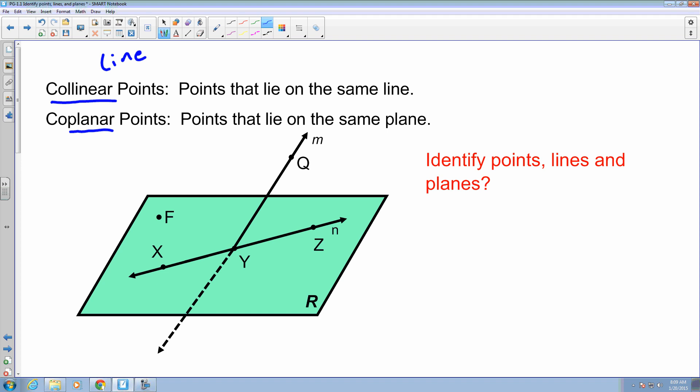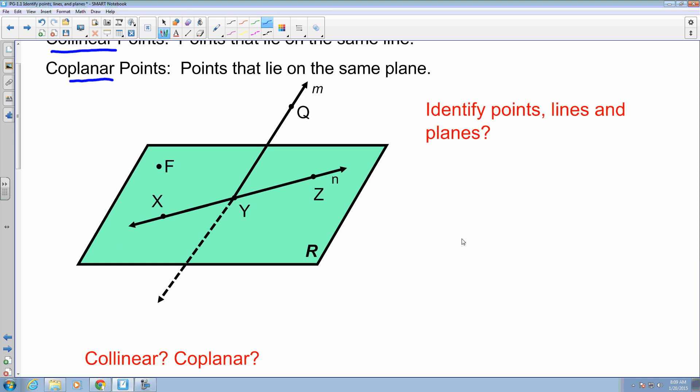So what I want you to do is identify points, lines, and planes for this particular instance. So if I got this here, it looks like I got points F, I got point X, I got point Y, and point Z, and finally point Q.